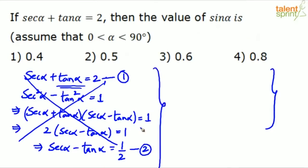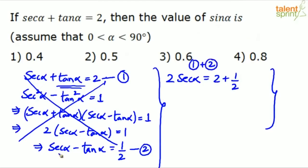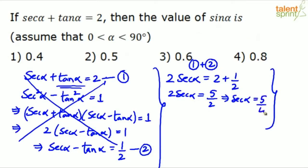Adding equation 1 and equation 2, the tan α terms cancel. So 2·sec α = 2 + 1/2 = 5/2, which gives sec α = 5/4.